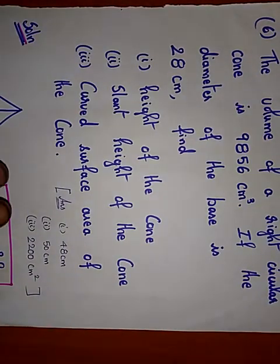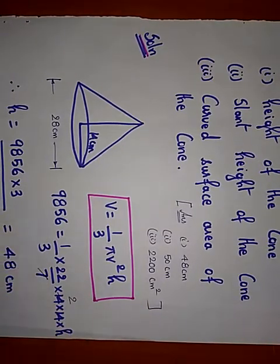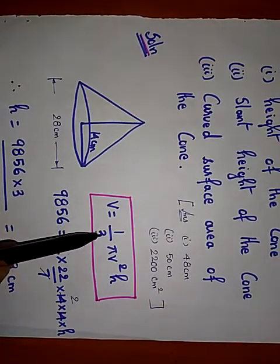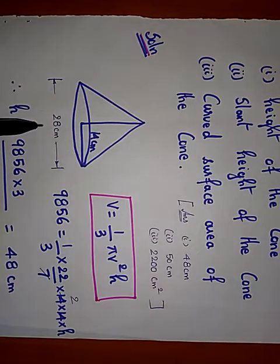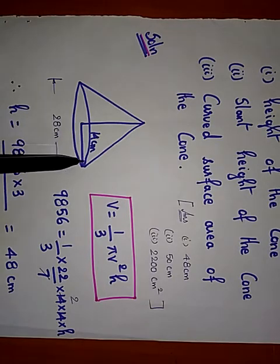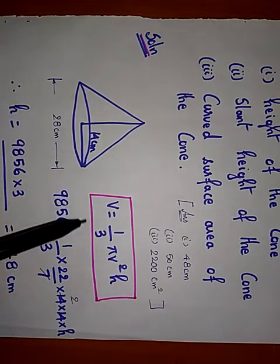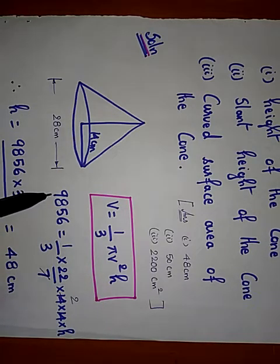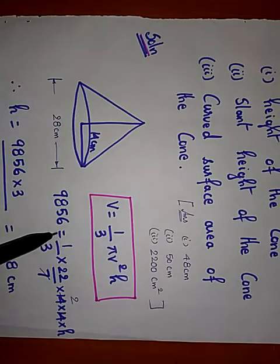Let us solve this problem. The volume of a cone is given by V = 1/3 π r² h. The diameter is 28 centimeter, therefore radius is 14 centimeter. The volume 9856 equals